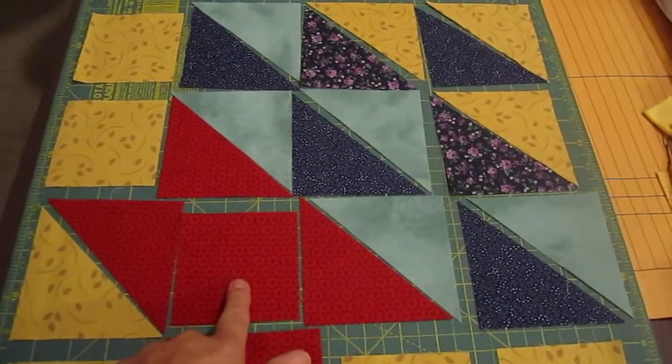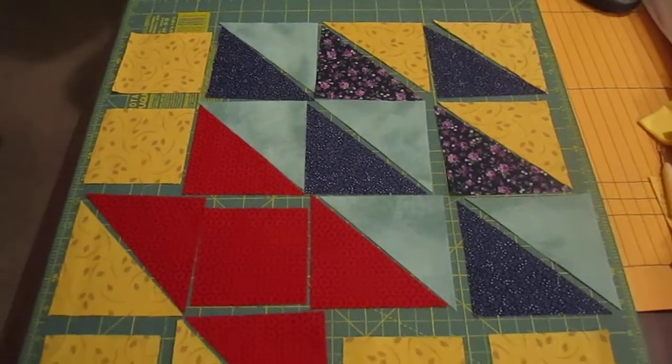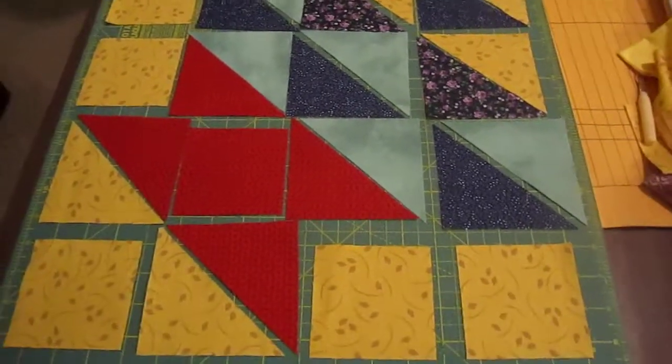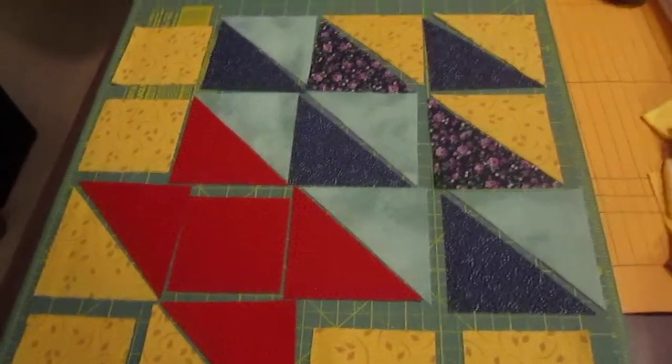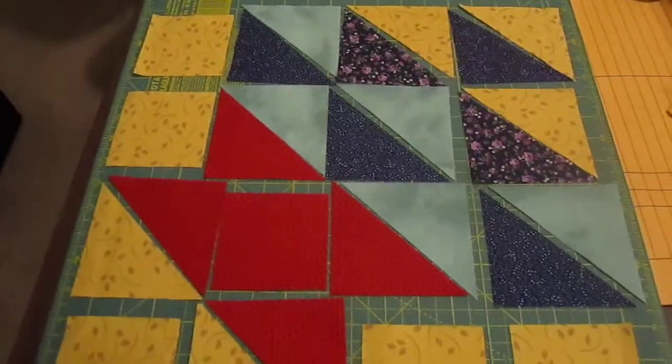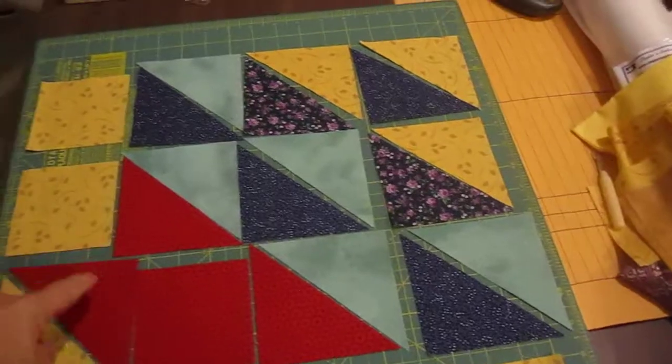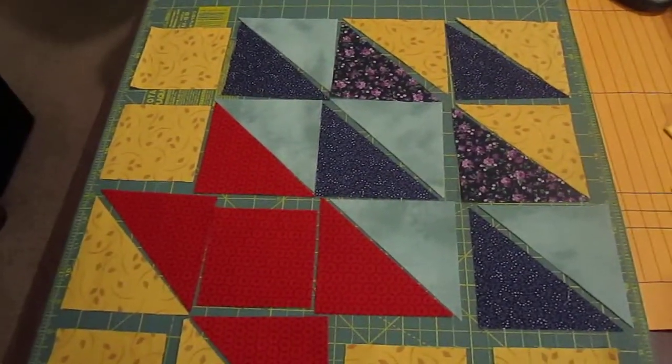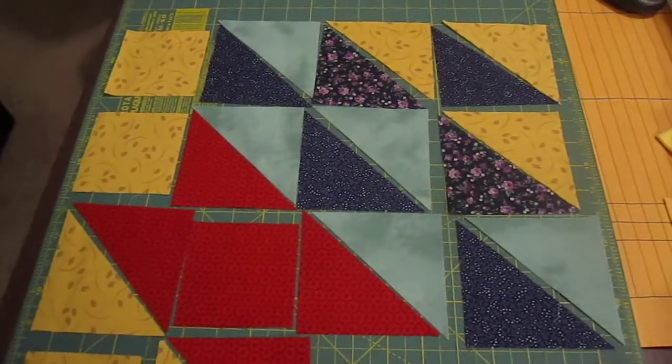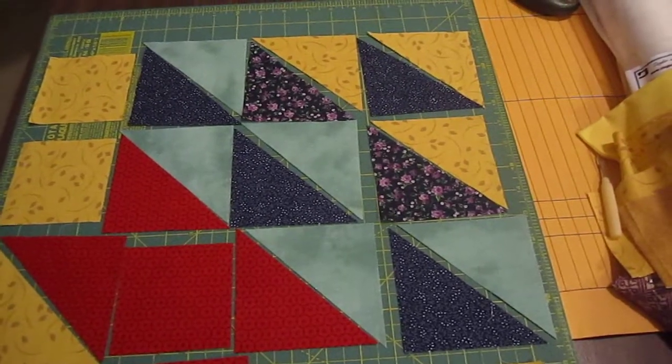We're going to have one red three-and-a-half-inch square. The rest are all triangles. If you cut two four-and-a-half-inch squares of the red, or whatever color you choose, you'll then cut diagonals and pair them up with the matching ones.